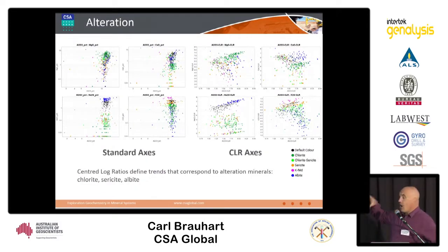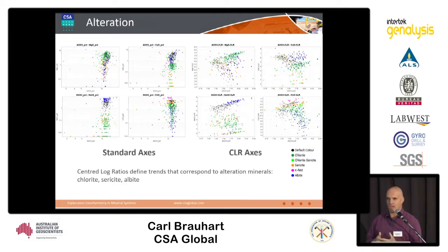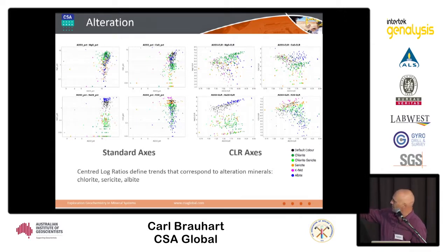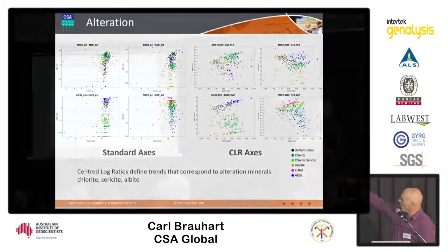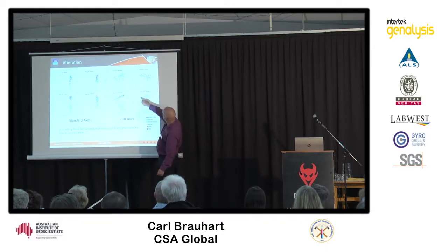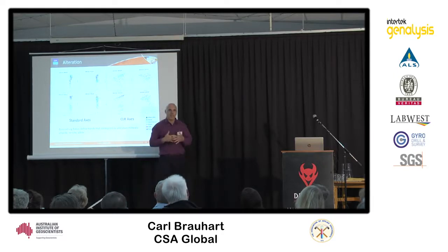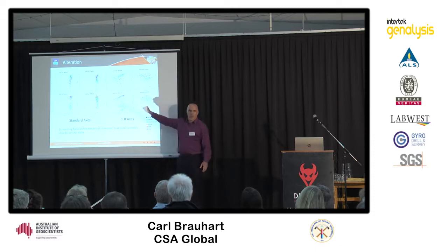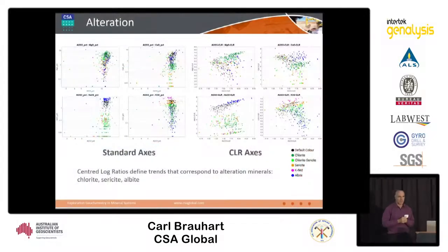We can look at these things a number of other ways. Another trick in the toolkit is the centred log ratio, which I find really helpful for principal component analysis. On the left hand side we've got aluminium versus four important major elements: magnesium, calcium, sodium, potassium. With the centred log ratios, the advantage is that there's a mineral line - that's albite, that's sericite, that's k-feldspar, and on the magnesium plot there's fluorite. That's a real advantage of centred log ratio diagrams.